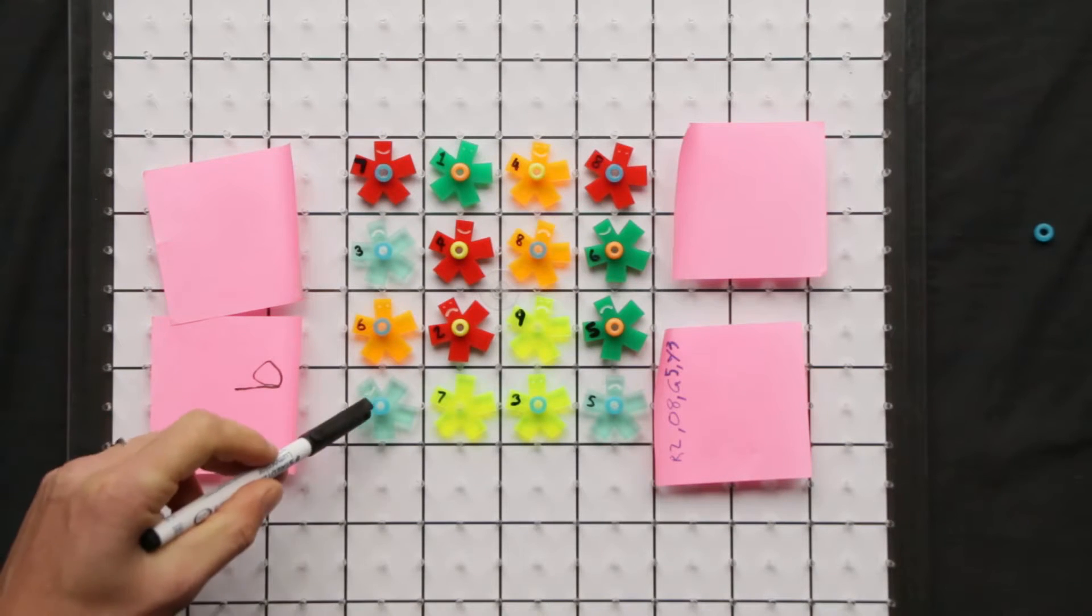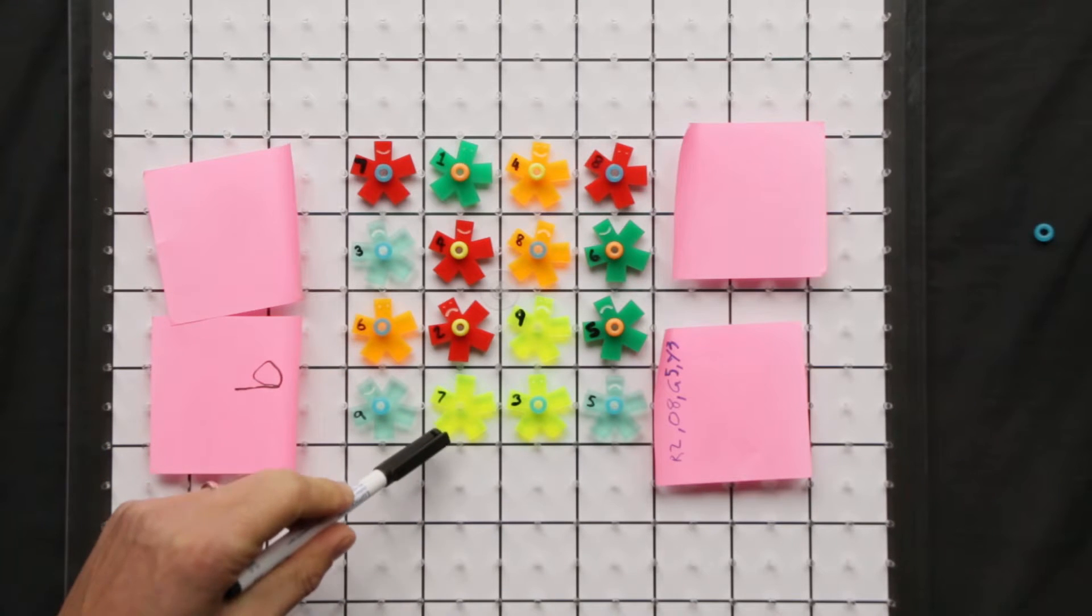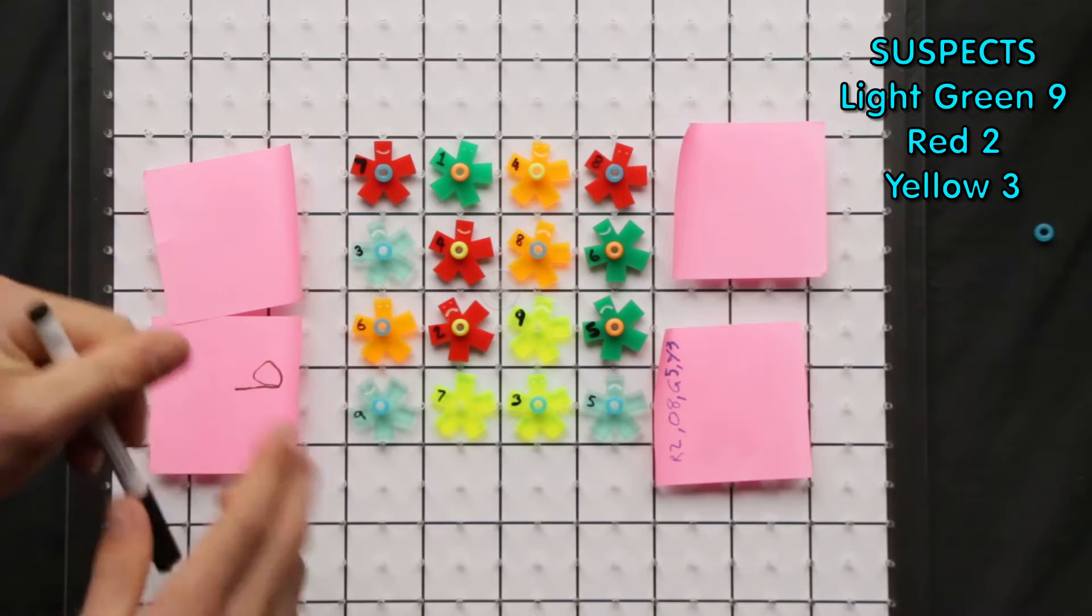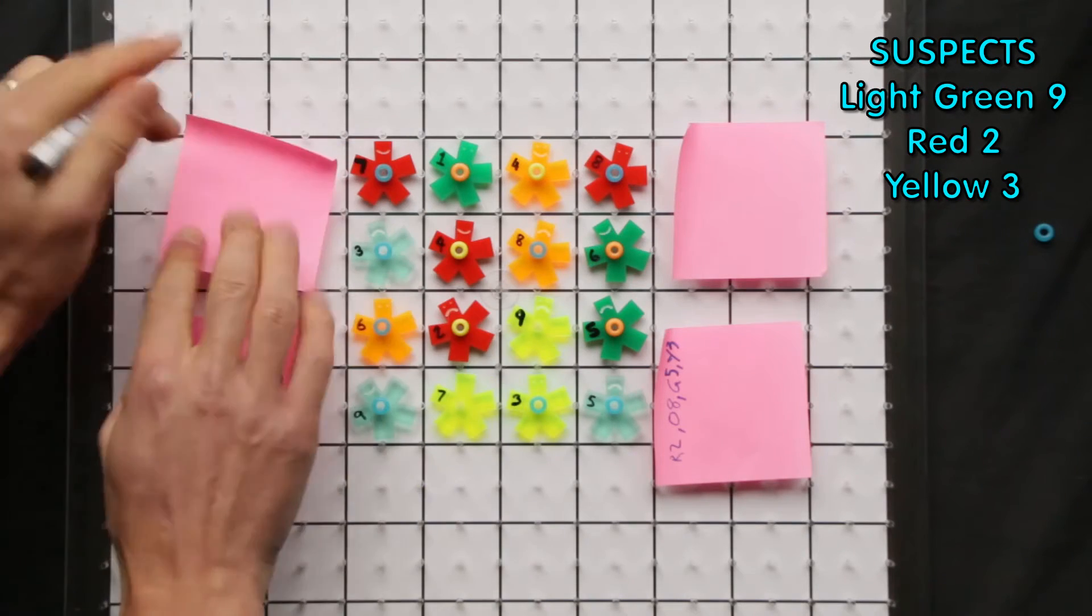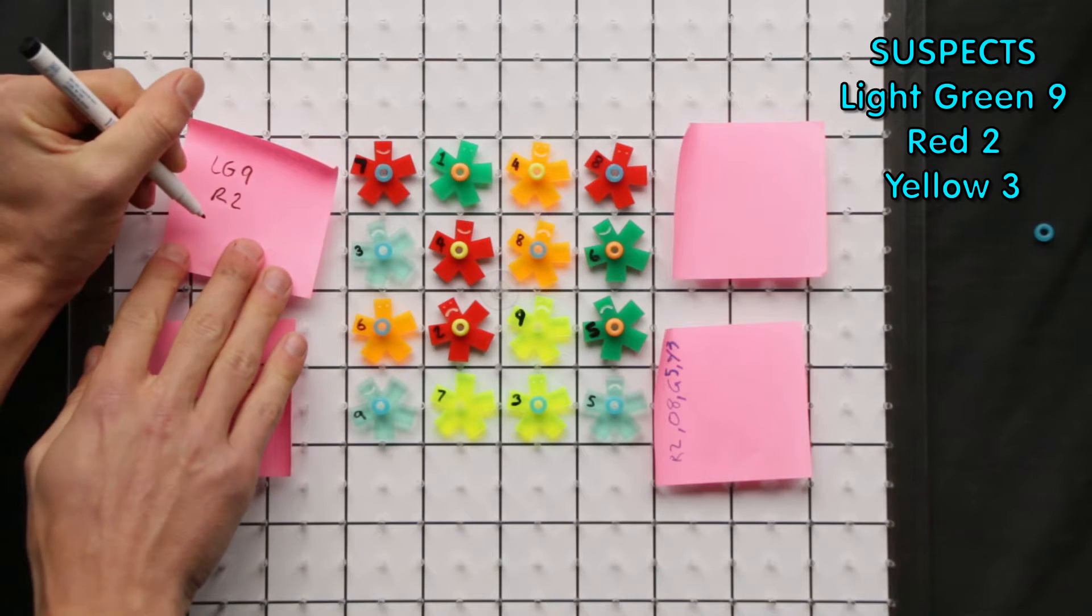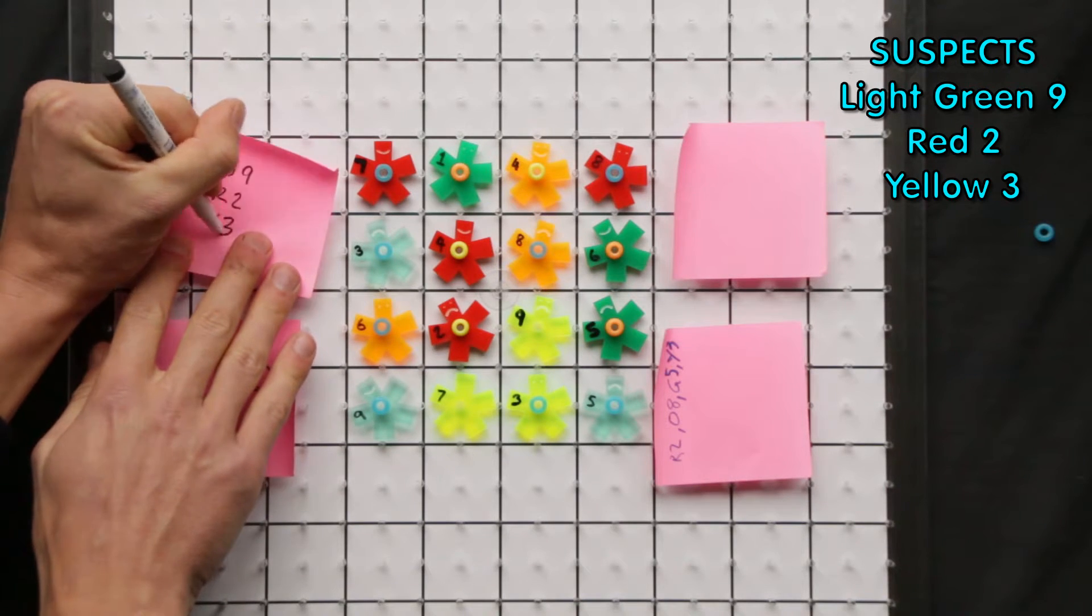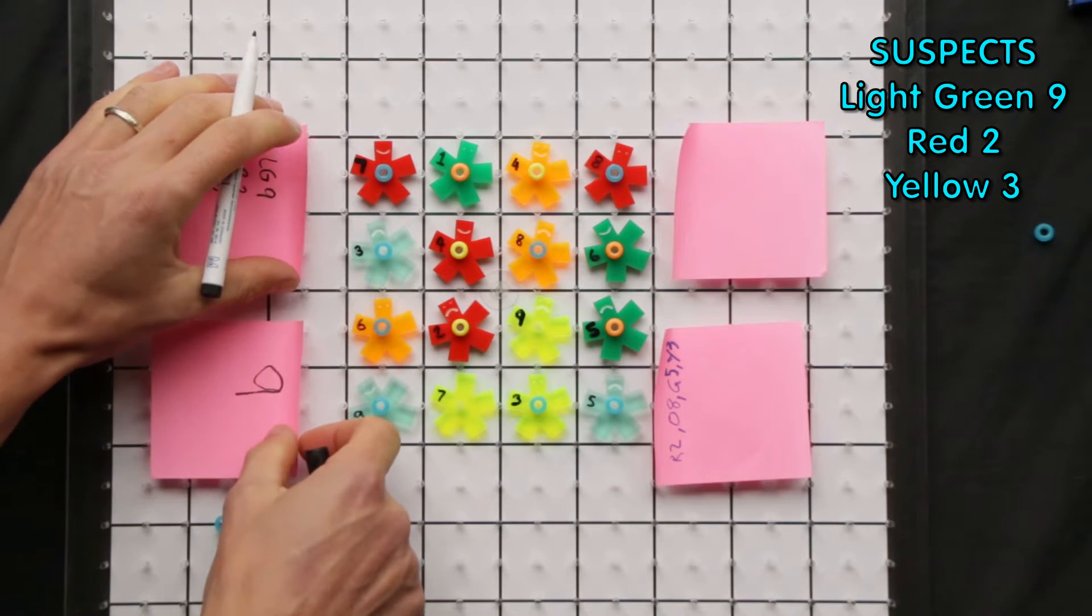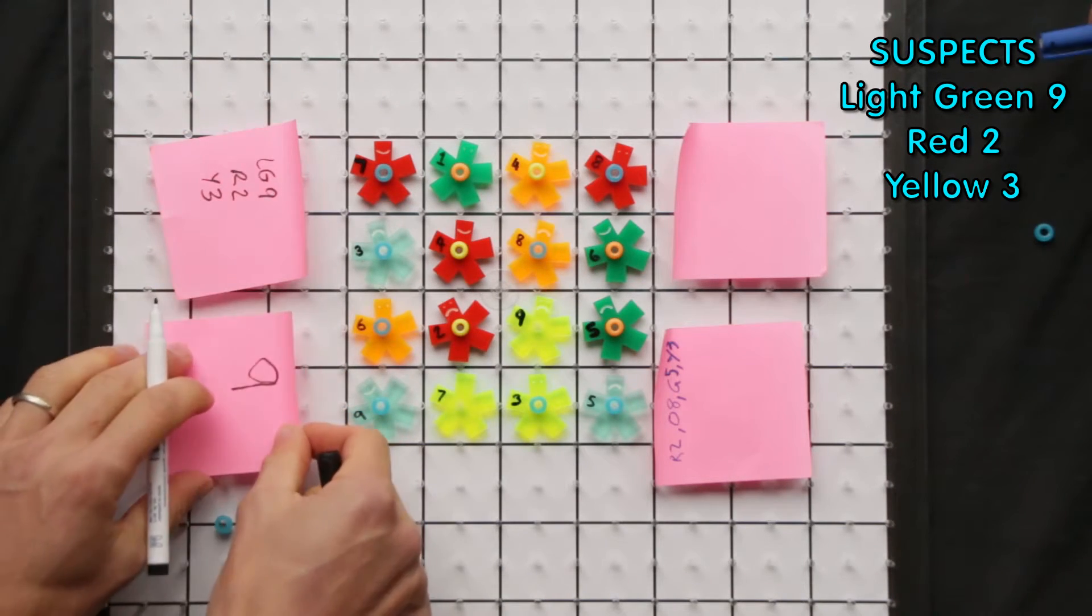And now it's Tim's turn. So I know that Tim is only one of three suspects here because he's stolen from the person there. So he's either light green nine, he could be red two, or he could be yellow three. So they're the suspects there. Now it's back to my turn.